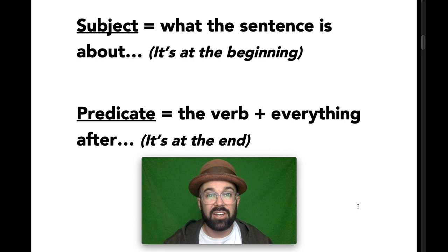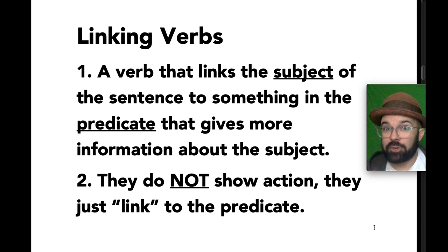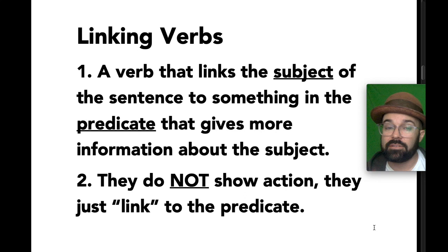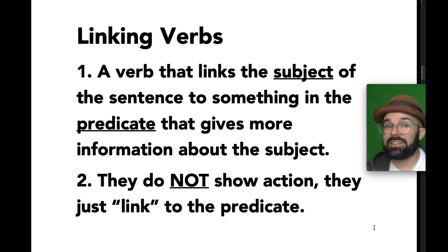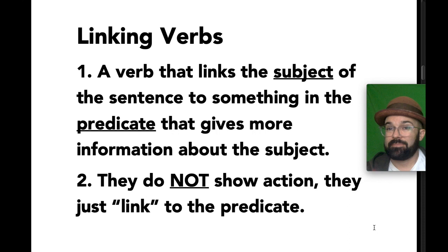So, what are linking verbs? Linking verbs are verbs that link the subject of the sentence to something in the predicate that gives more information about that subject. That could be an adjective that is describing the subject — a predicate adjective — or it could be a noun that is essentially the same thing as the subject, which is a predicate nominative. But the important thing is that a linking verb links the simple subject to something in the predicate.